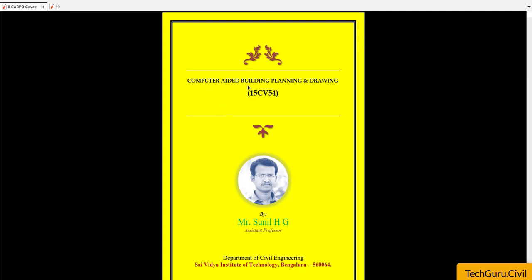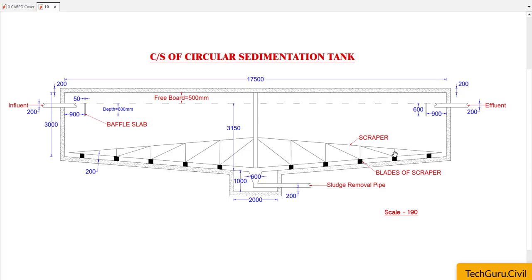Hello friends, welcome to CABPD Tutorials. In this class we are going to learn how to draw the cross-section of a circular sedimentation tank in AutoCAD in a very simple manner. This is the cross-section of total dimensions 17500 by 3000 millimeters, with a wall thickness of 200 mm. At the inside there will be a freeboard of 500 mm.